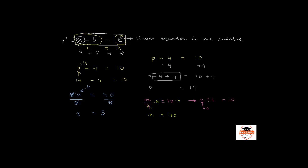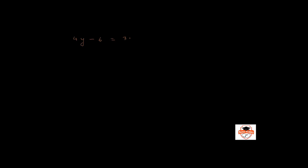You can follow these simple rules to solve more complex equations. For 4y - 6 = 30: first add 6 to both sides — the minus 6 and plus 6 cancel to give 4y = 36. Then divide both sides by 4, so y equals 36 over 4, which is 9.